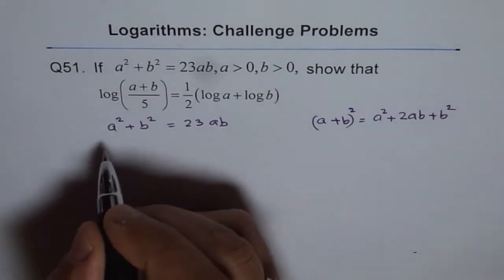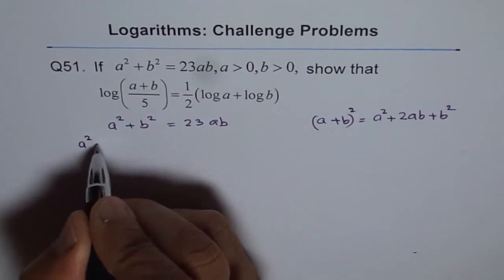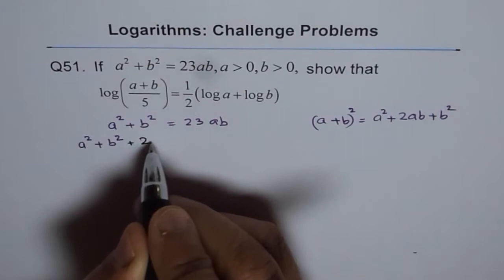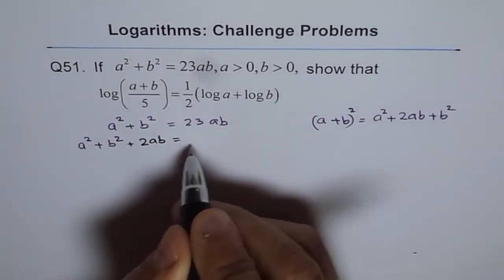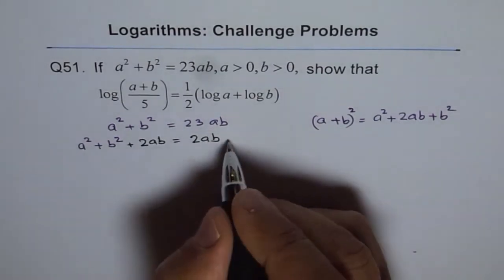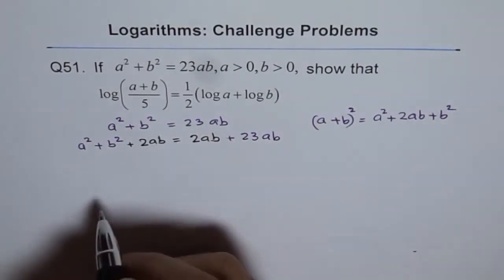Let me do that. I will rewrite this, which is a square plus b square, and I will add 2ab here. And I will add 2ab on the right side also. So we have 2ab plus, already there was 23ab.